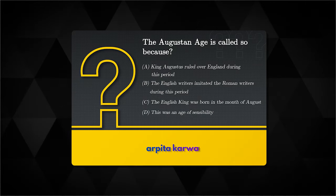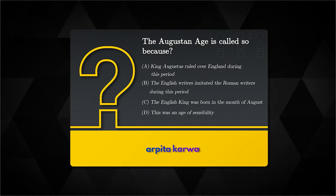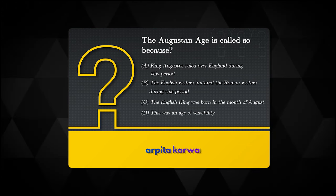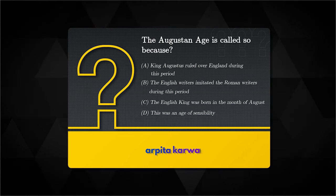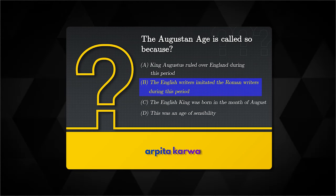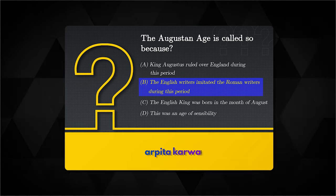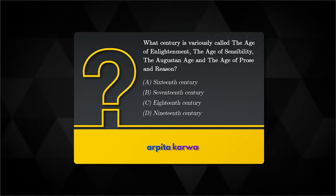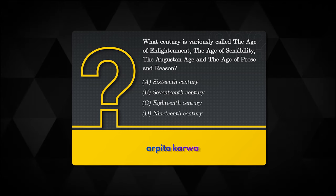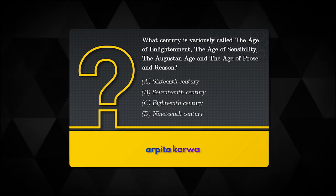The first question is: The Augustan Age is called so because — have a look at the options and think about the right answer. The correct answer is option B: the English writers imitated the Roman writers during this period. Next question: What century is variously called the Age of Enlightenment, the Age of Sensibility, the Augustan Age and the Age of Prose and Reason?